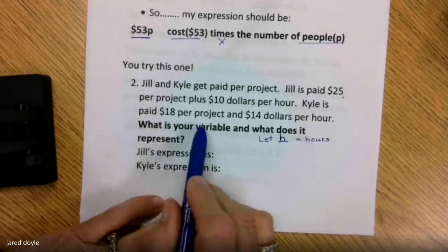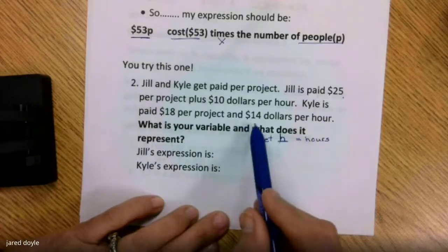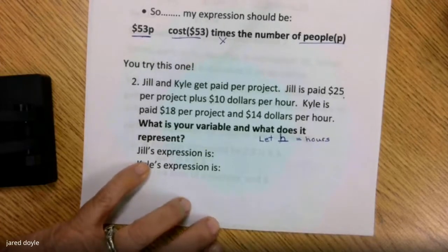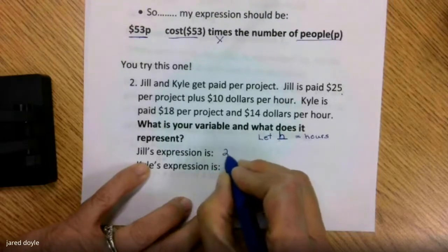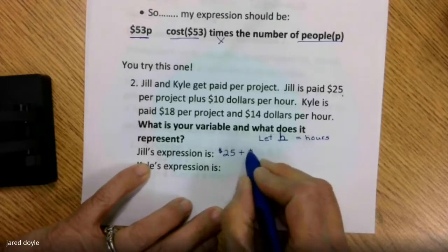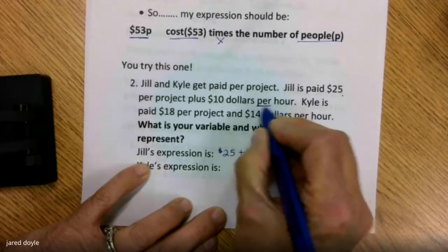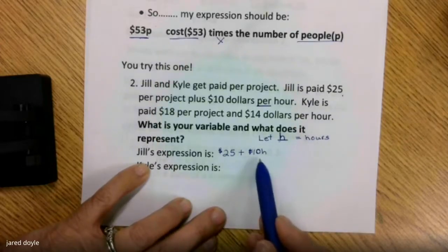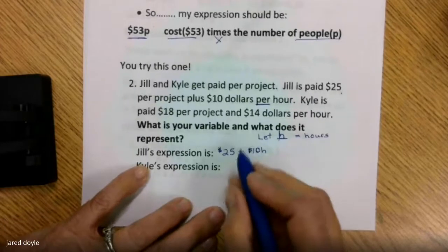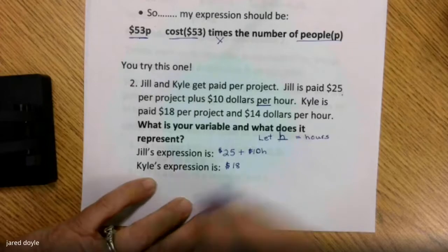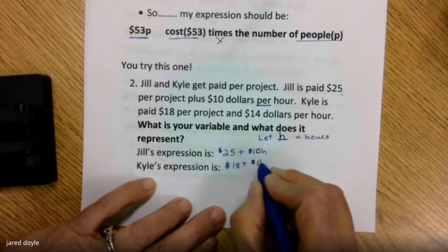Kyle is paid $18 per project — we know about that. He's paid $14 per hour. Do we know how many hours Kyle works? No. So H stands for hours in both. Let's look at Jill's expression: Jill walks in the door, they hand her $25 to come in because she's going to do this project. She's also going to get paid $10 per hour, which means multiply. So Jill's expression is $25 plus $10H. Following that, Kyle's expression is $18 plus $14H.